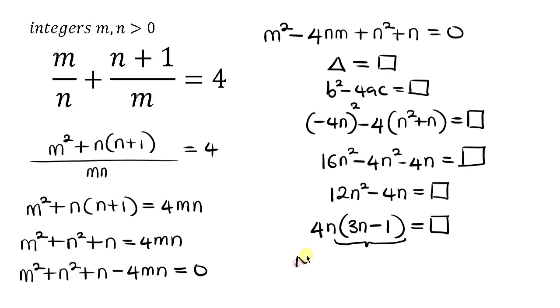But notice, notice that the GCD of n and 3n - 1, n and 3n - 1 is equal to 1. Because any prime factor that divides n must also divide 3n, but not 3n - 1.